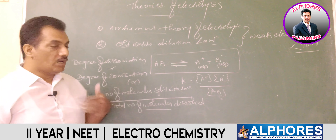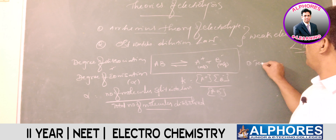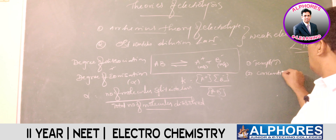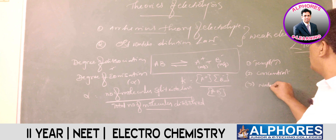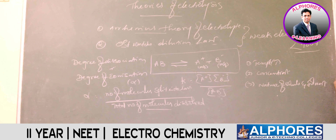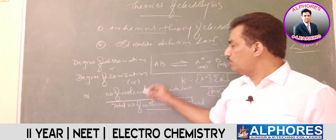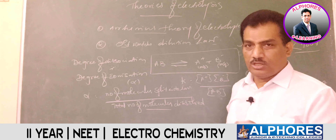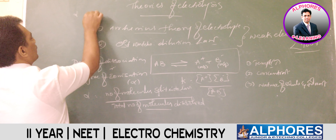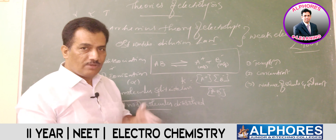The degree of dissociation is influenced by three factors: temperature, concentration, and nature of solute and solvent. When temperature increases, degree of dissociation increases because dissociation is an endothermic process. Therefore, α is proportional to temperature.